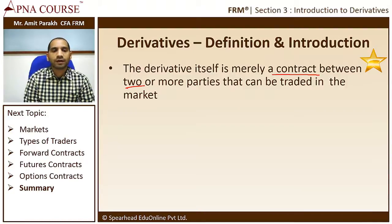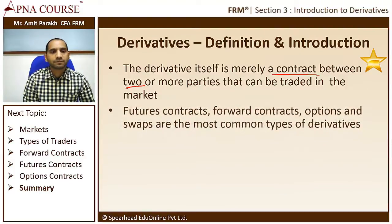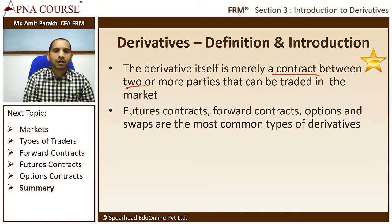Futures contracts, forward contracts, options, and swaps are the most common types of derivatives. These are the kinds included in the syllabus and we will look at them in detail going forward.